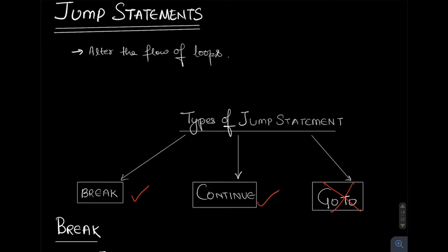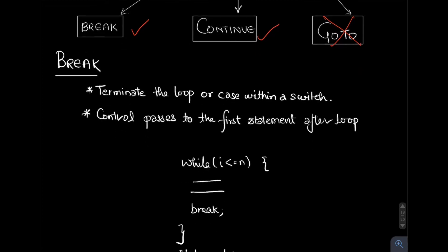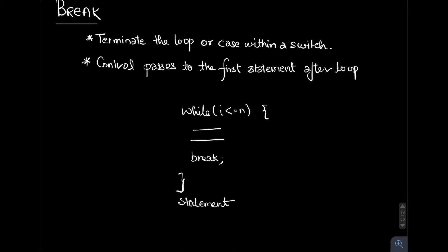Break is basically used to terminate the loop or case within a switch statement. Just focus on the loop part—it is used when we want to terminate the loop. In the last section we saw that the loop terminates when the test condition evaluates to false. Break is just another way to terminate it even though the test condition is not evaluating to false.